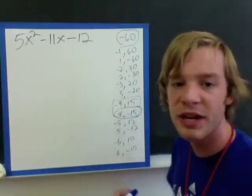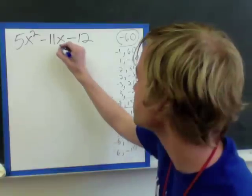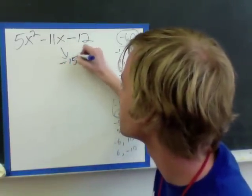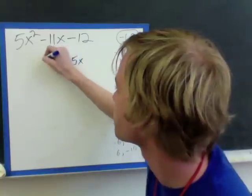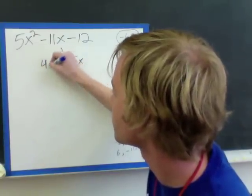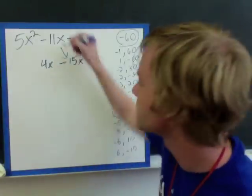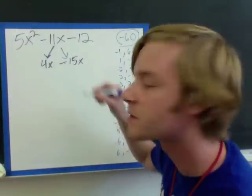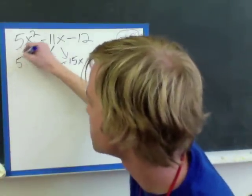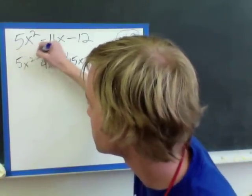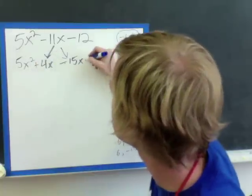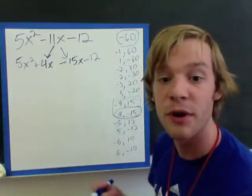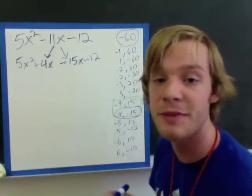So we're going to split up the negative 11x, like so, and we're going to bring down the 5x squared and the negative 12. Okay, now I'm going to put parentheses around my first two terms and my second two terms.